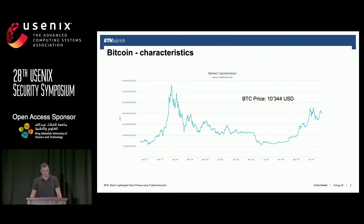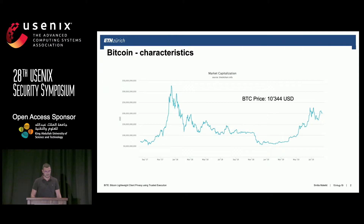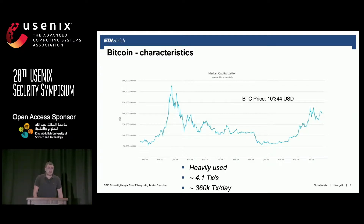To start off, a little bit about the characteristics of Bitcoin. We all know it's the first and still most popular cryptocurrency based on blockchain, and since its inception in 2008 it has really fueled considerable interest in decentralized currencies and other blockchain applications. The overall market cap currently is over 200 billion US dollars.